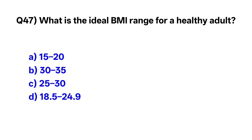Question number forty-seven: What is the ideal BMI range for a healthy adult? The correct option is D, 18.5 to 24.9.